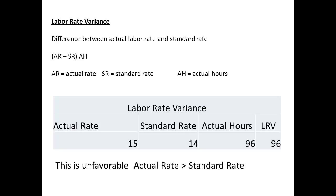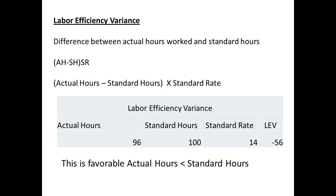The labour rate variance will be the actual rate less the standard rate, multiplied by the actual hours. In this case, the result is positive at $96. This is regarded as unfavourable, since the actual rate was above the standard rate. The labour efficiency variance is calculated by actual hours less standard hours, multiplied by the standard rate. This is calculated as negative $56. This is regarded as favourable, since actual hours worked were less than the standard hours.